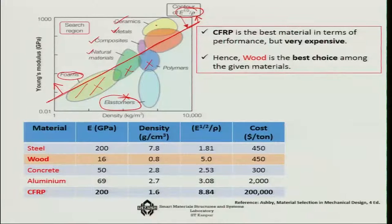On the top part, we have options of ceramics, metals, composites, and some natural materials. Let us try to take some materials. First, we start with the cheapest material, steel. Modulus of elasticity is about 200 gigapascals, density is about 7.8 grams per cc, square root of E by rho will come something like 1.81. Cost is about 450 dollars per meter, so it is one of the cheapest.